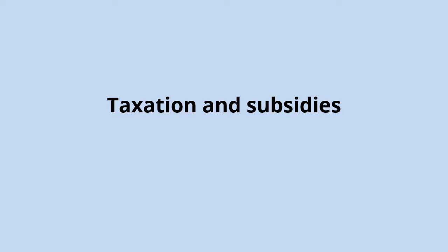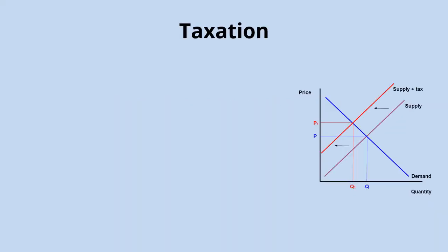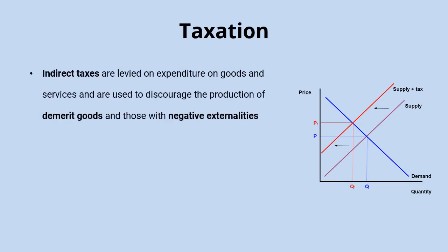This video is the first looking at different methods of government intervention to correct market failures and focuses on the use of taxes and subsidies. Taxes can be direct or indirect. Direct taxes are levied on incomes and profit — income tax or corporation tax are examples — but it's indirect taxes that we're interested in here, as they're levied on expenditure and can be used to discourage the production of demerit goods and goods with negative externalities.